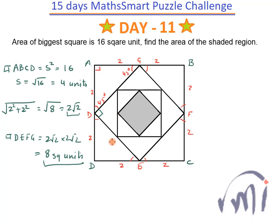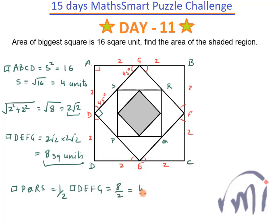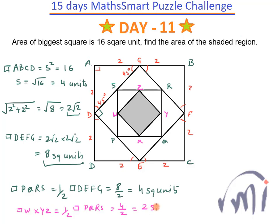Similarly, if I name these points as PQRS, the area of PQRS will be half the area of square DEFG, which equals 8 divided by 2 — that is 4 square units. And if I name the innermost square as WXYZ, the area of square WXYZ will be equal to one half the area of square PQRS, which equals 4 divided by 2 — that is 2 square units.